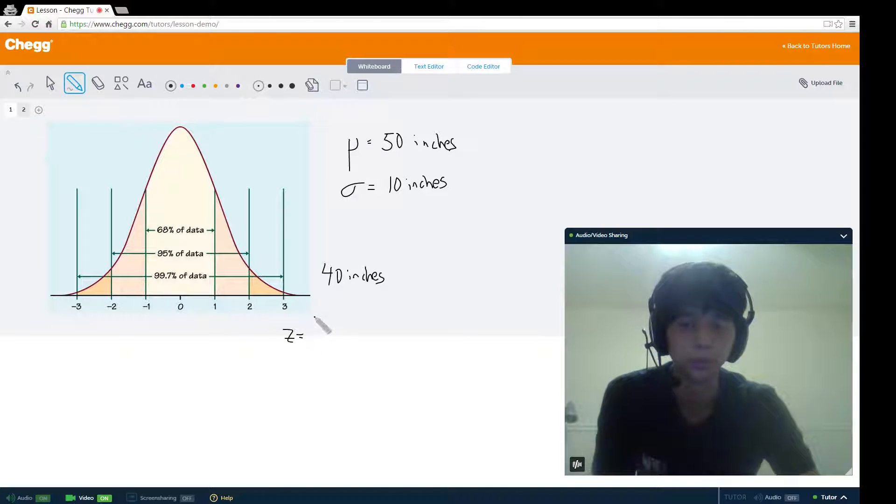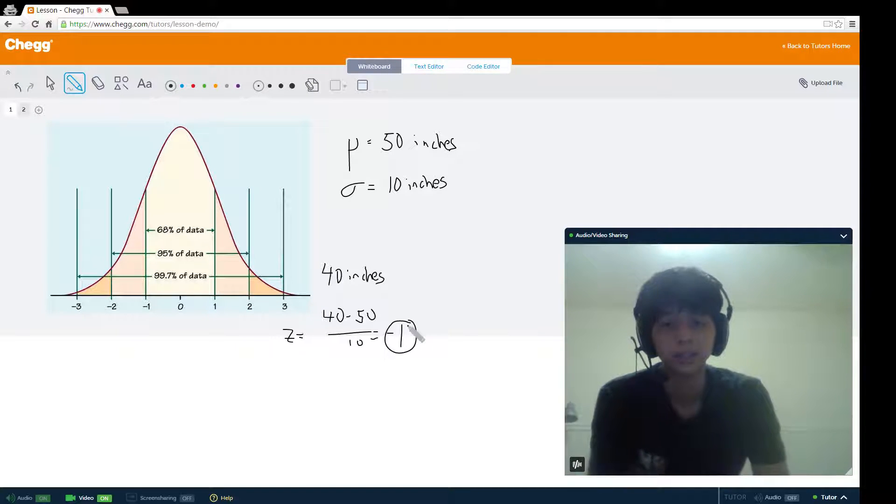Our z-score is going to equal our observation, which is 40, minus our mean, which is 50, divided by 10. This would end up being negative 1. Remember that the sign matters. This z-score tells us that our observation is one standard deviation below the mean.